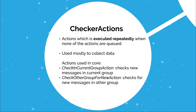So there are special Actions called Checker Actions. Checker Actions are mostly used to collect data. There are a couple of Checker Actions used in the core Subbot API. The first one is CheckInCurrentGroupAction, which checks for new messages in the current group, and the other is CheckOtherGroupForNewAction, which checks for new messages in other groups.